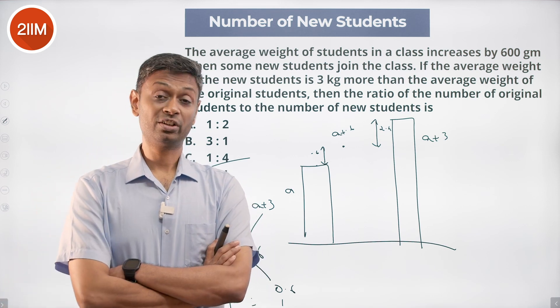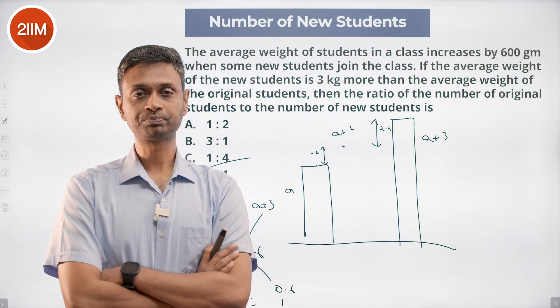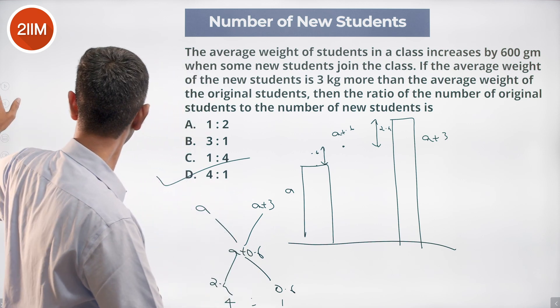of weighted averages. Existing average, new guys, weighted average, we are through. The ratio should be 4 to 1.